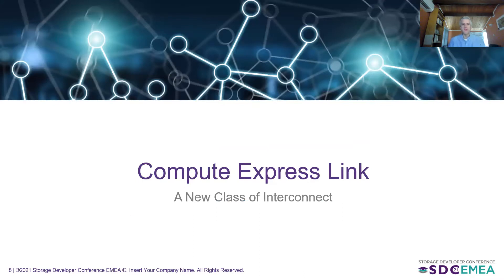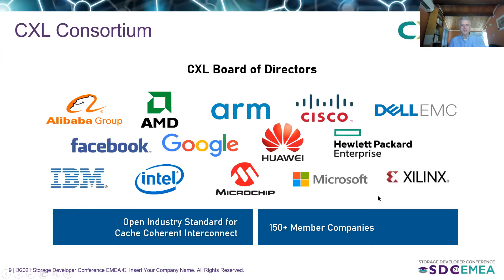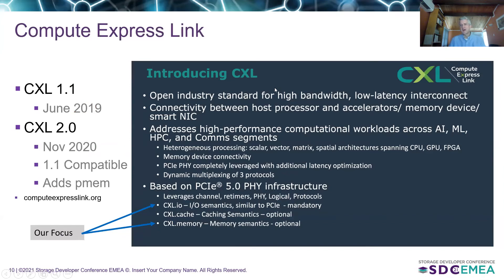Now let's talk about Compute Express Link, or CXL. It's a new class of interconnect. There's a CXL consortium that drives its definition, with over 150 member companies, and it's an open industry standard for a cache-coherent interconnect. It's high bandwidth and low latency, and importantly it's based on PCI-E electricals — machines will have slots that are essentially PCI-E or CXL slots. Over those electricals, three protocols are defined in the CXL spec: CXL.IO, CXL.cache, and CXL.mem. I'm going to talk mostly about IO and MEM.